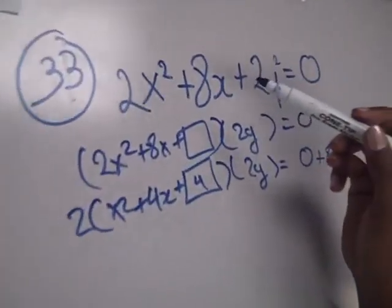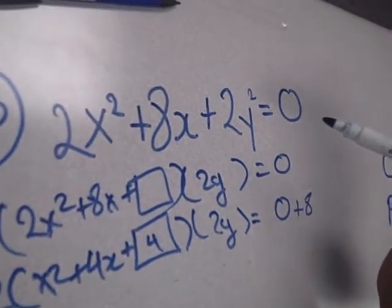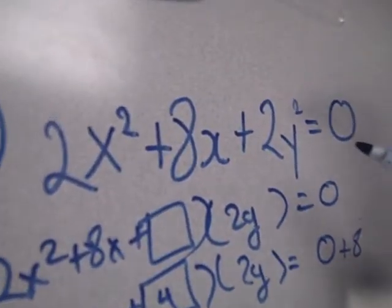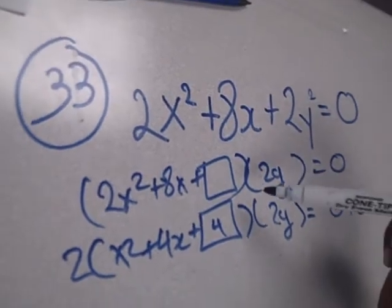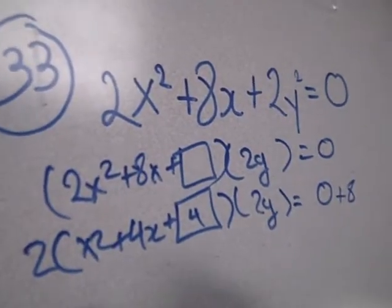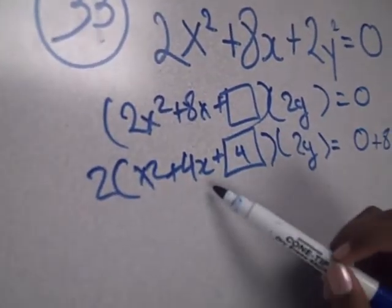Our equation was 2x² + 8x + 2y² = 0. What we first did was group the x's and y's together, and then we factored out a 2 and got x² + 4x.